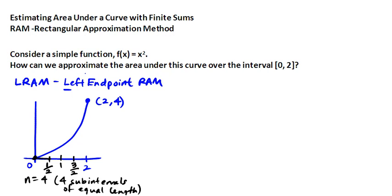Then I go to a half. So at a half, the height of the rectangle is going to be whatever f at 1 half is. And then at 1, the height is going to be whatever f at 1 is. And then at 3 halves, the height is going to be whatever f at 3 halves is. And we're going to approximate the area under the curve that way.